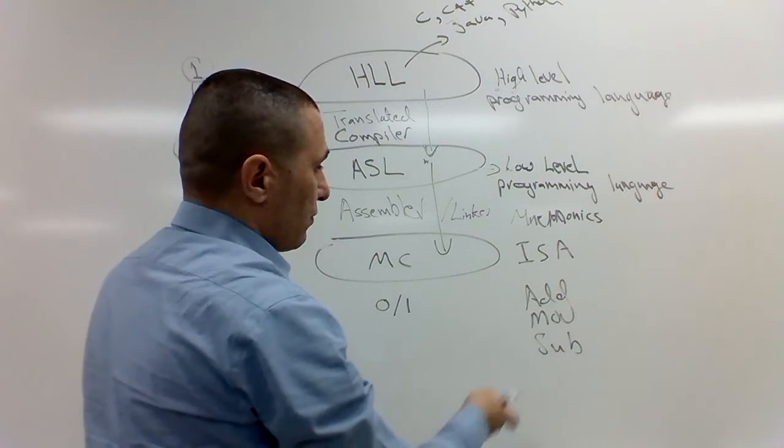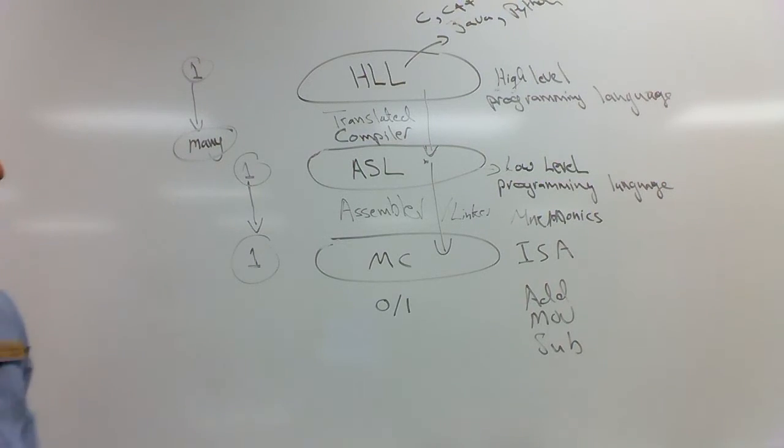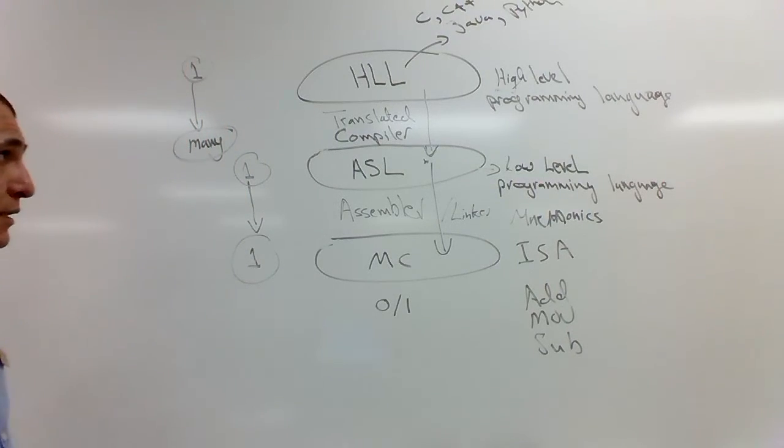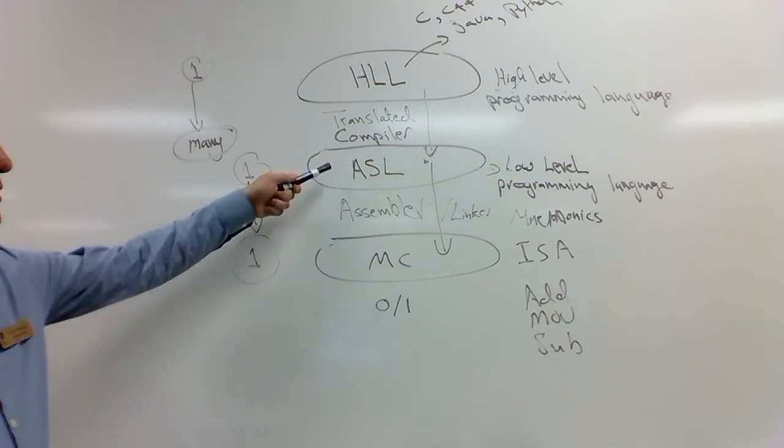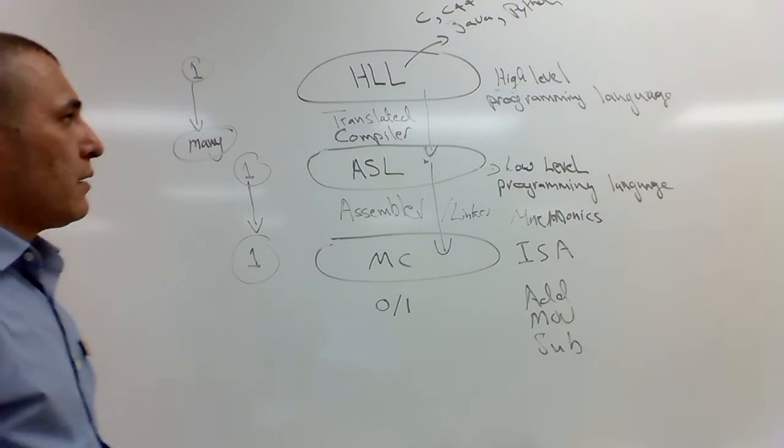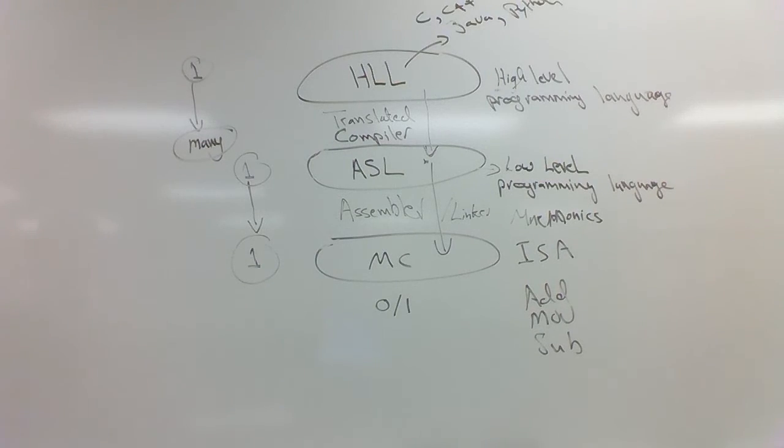We use mnemonics because it's easier to remember and it's easier to deal with. Assembly is usually faster. It's simple, but it's more difficult to program in because of the abstraction. High-level languages are usually near English.